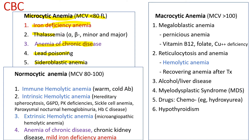When the MCV is over 100, it's a macrocytic anemia. Macrocytic anemia includes megaloblastic anemia, which encompasses pernicious anemia and anemia of vitamin B12, folic acid, folate, and copper deficiency. Any anemia associated with reticulocytosis, such as hemolytic anemia, is a macrocytic anemia because the size of reticulocytes is much bigger than mature RBCs. Therefore, the MCV of hemolytic anemia is very frequently high.